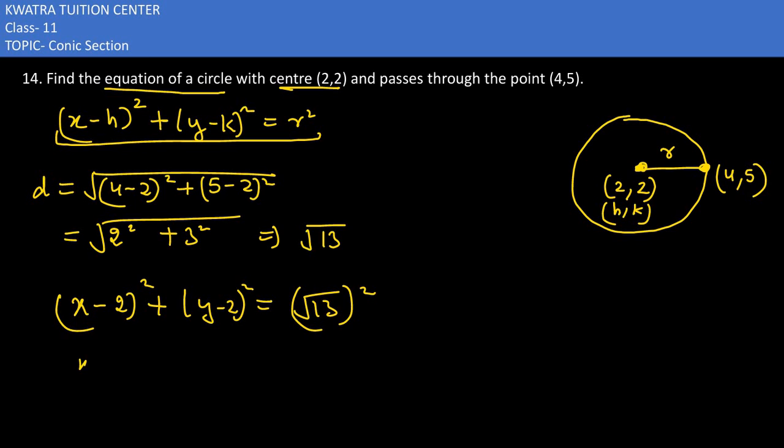Simplifying it further, I would have x squared plus 2 squared minus 4x, plus y squared plus 2 squared minus 4y.